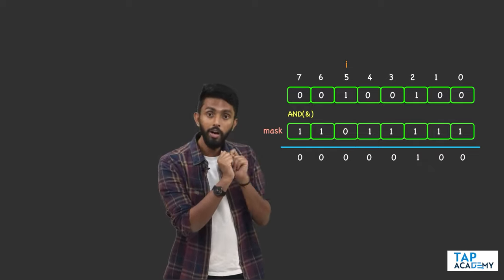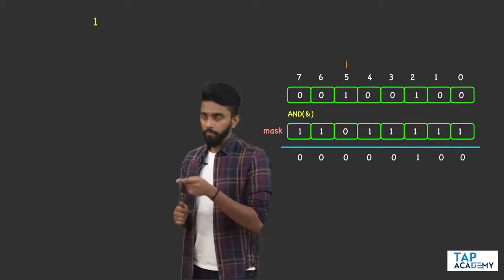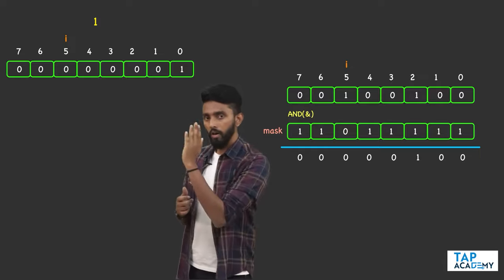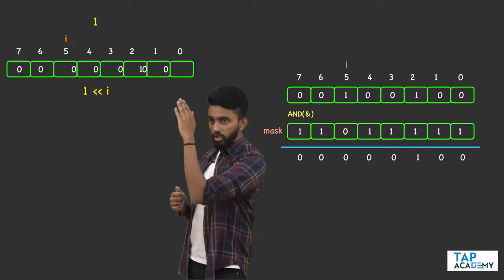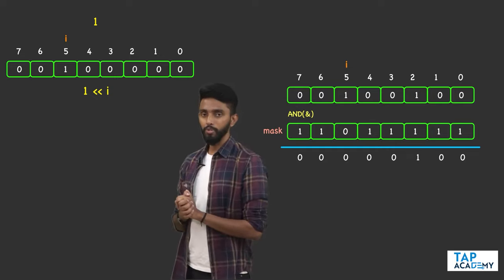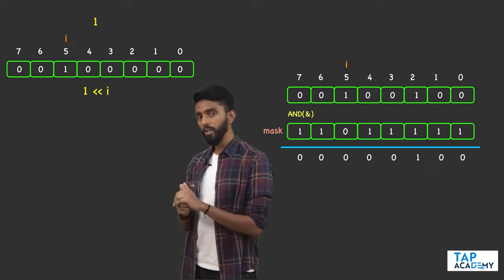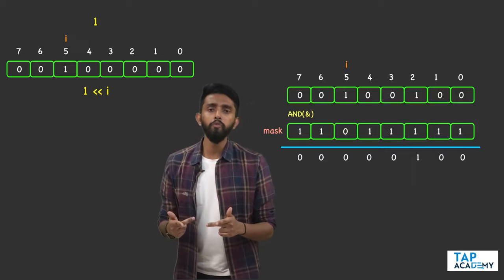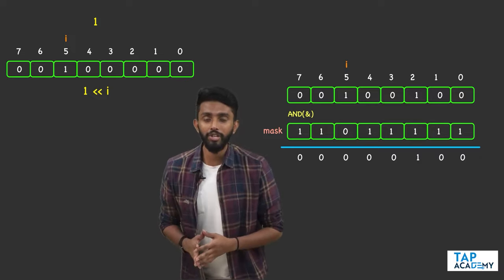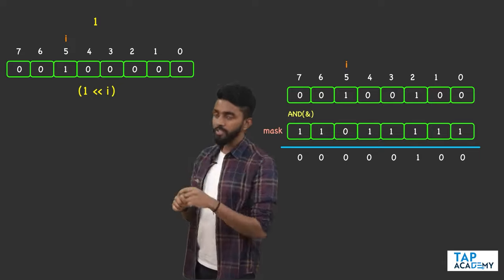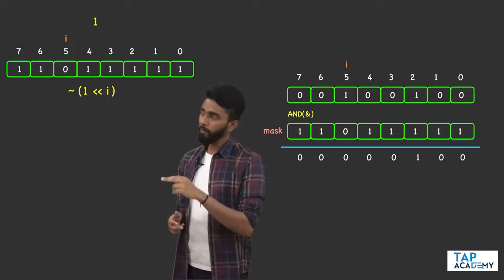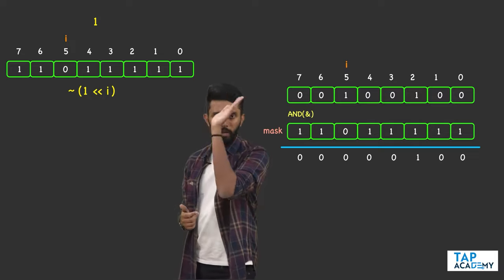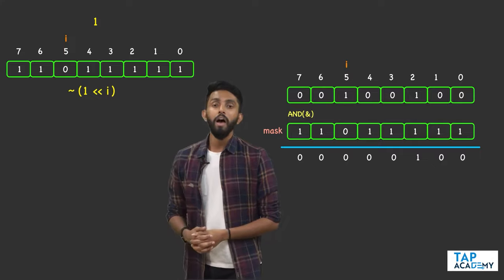If I do AND with this mask, every other bit remains the same and the ith bit at position five goes from one to zero — successfully switched off. To get this mask: take one, left-shift by i positions so one comes to the fifth position. But now that one should become zero and everything else should be one — which means flipping must happen. Use the bitwise NOT operator: ~(1 << i). After shifting, bit flip happens — all ones become zeros and all zeros become ones. Then take that mask and perform AND. That's it.